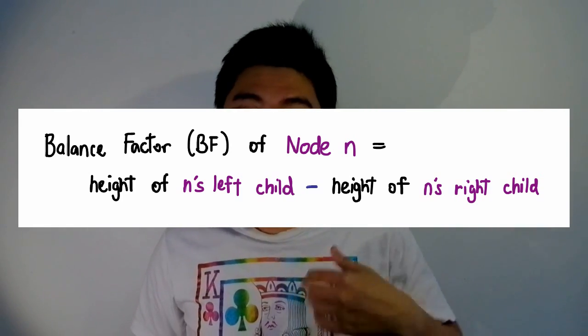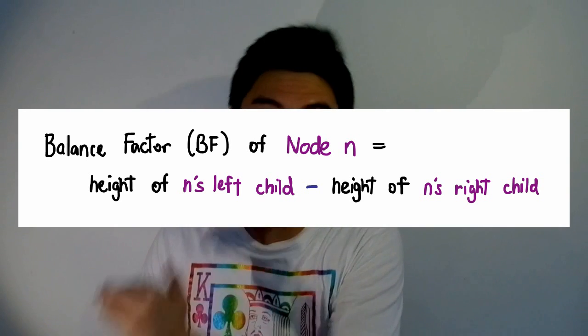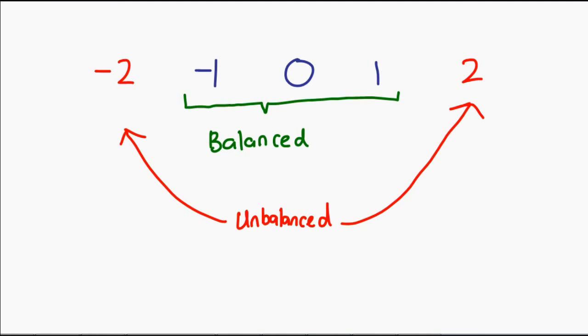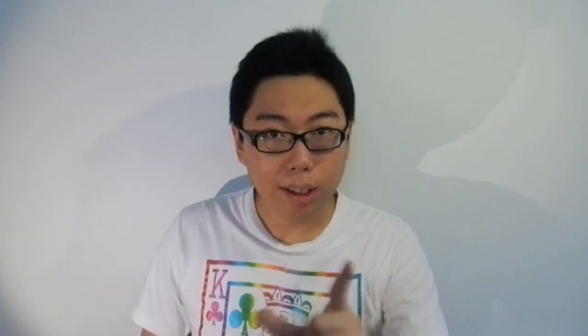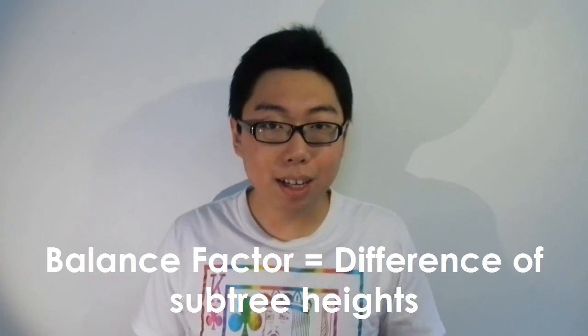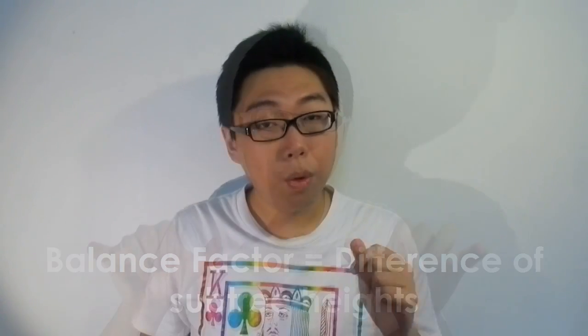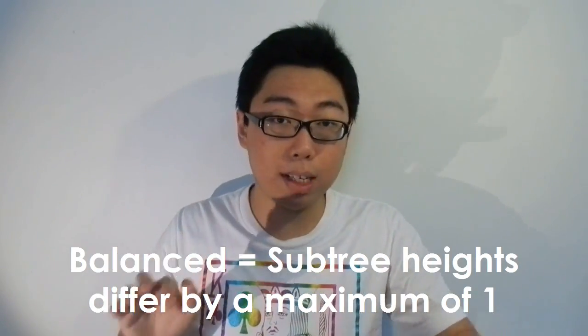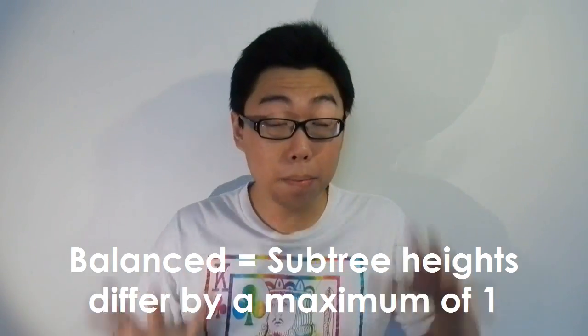The AVL tree algorithm does a simple calculation on the height information of two nodes to determine the balance factor. The balance factor of any node is the height of its left child minus the height of its right child. If your final balance factor is negative 1, 0, or 1, the tree is balanced. If the balance factor is negative 2 or 2, the tree is not balanced and we have to do something to fix it. So essentially, we use whether one subtree is taller than the other by a height of 2. If one subtree is taller or shorter by a height of 1, that is okay — the tree is still balanced. A tree is only unbalanced if that height disparity is 2.